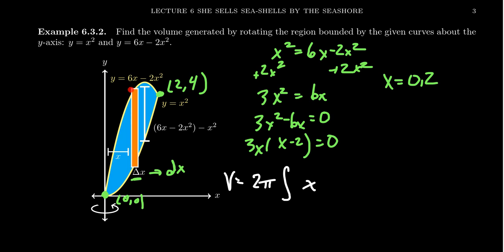Well, the top of the rectangle is 6x minus 2x squared. The bottom is x squared. So the length is the difference of those things. 6x minus 2x squared minus x squared. And then what's the thickness of this rectangle? That's exactly a dx right there.